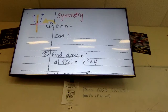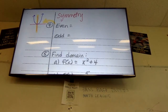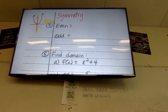Is symmetry the same thing as end behavior? It is not the same thing, but we do use even and odd in end behavior, which I know gets confusing. We won't really talk about that until chapter two — for polynomials, we'll say a graph is positive even or negative odd, and those words matter then.